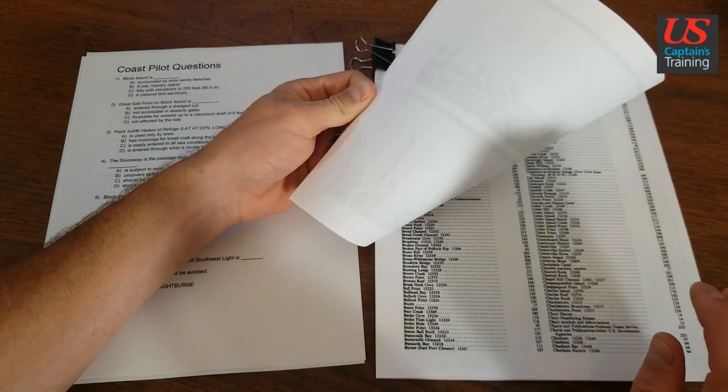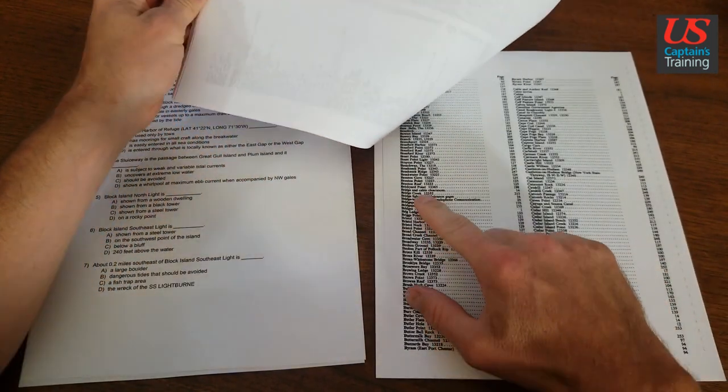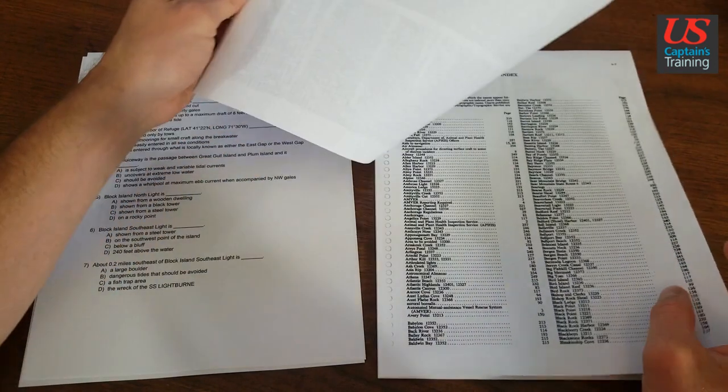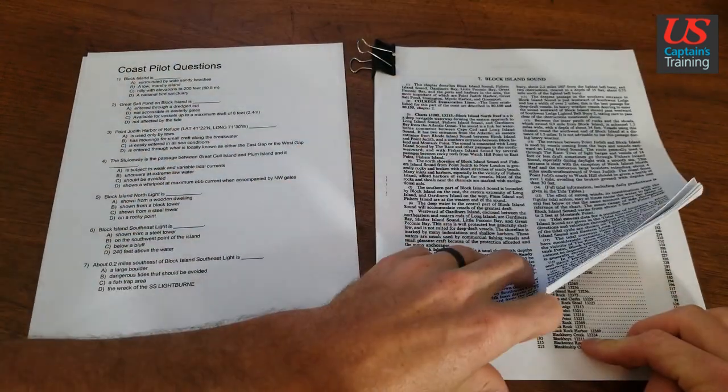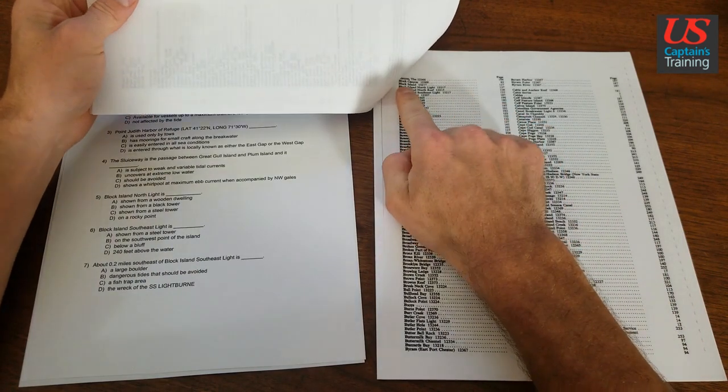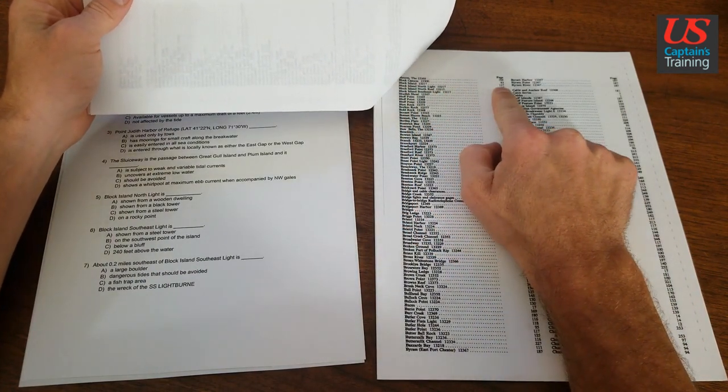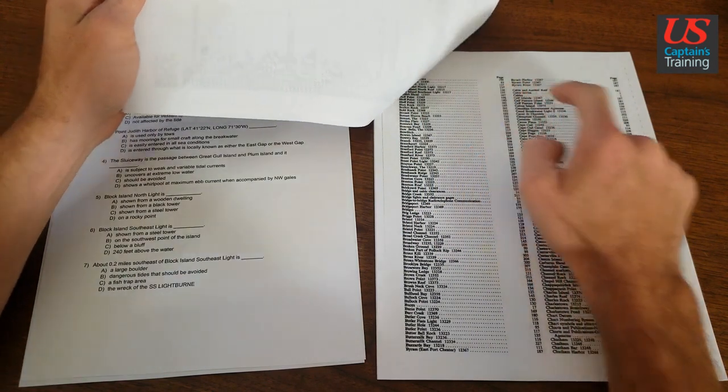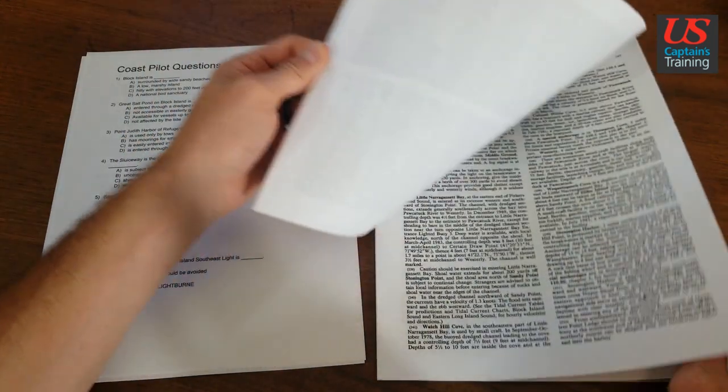Here's B's. Here we are, Block Island, and we're seeing page 137. So now we go to page 137.